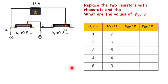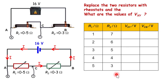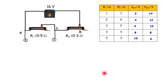Before we solve the question, we should first transform the diagram to an easily solvable one and put in the current. Note that the same current passes through R1 and R2, so we can use the potential divider principle. For the first row, the ratio of R1 to R2 is 1:7, hence the ratio of Vxy to Vcb is also 1:7. The total PD is 16, so we get 2 and 14. Using the same principle, we can fill in the rest of the table.